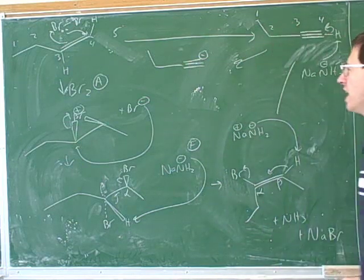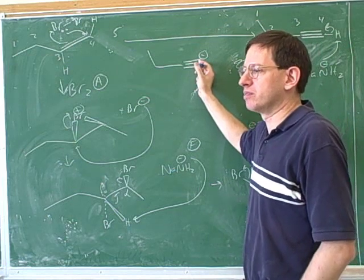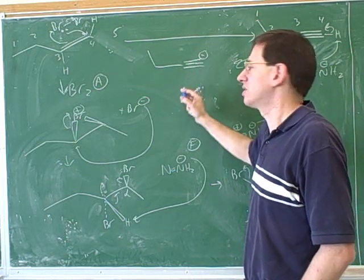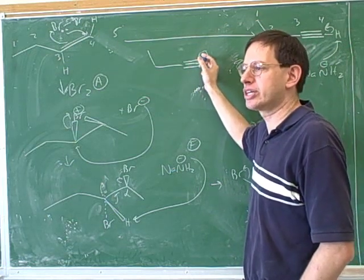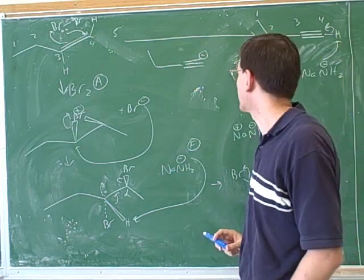So the point is, it turns out that SP carbons are more electronegative than SP3. So this is a more stabilized negative charge. So we're able to take this hydrogen where we normally can't take a hydrogen off of a carbon.